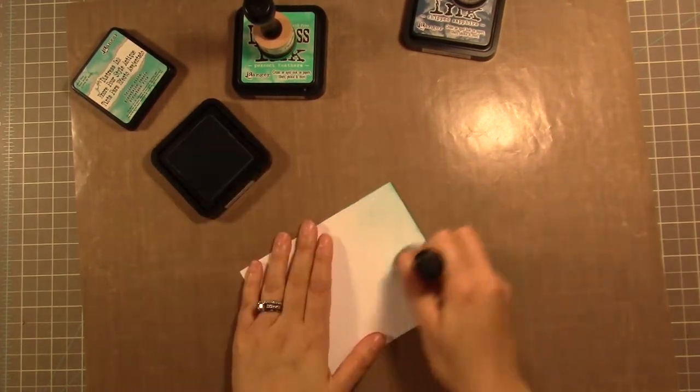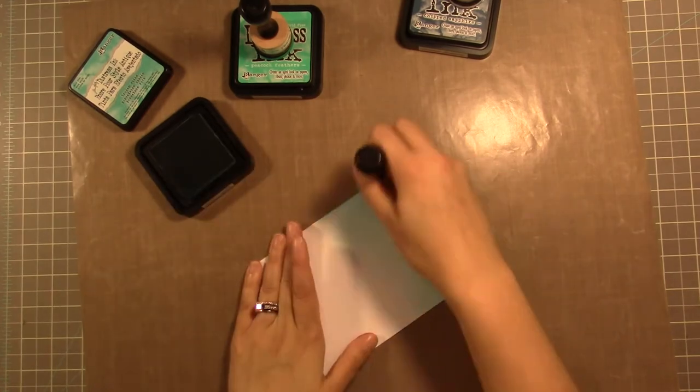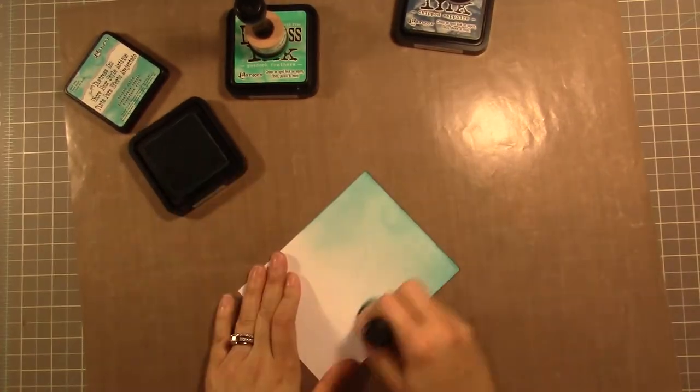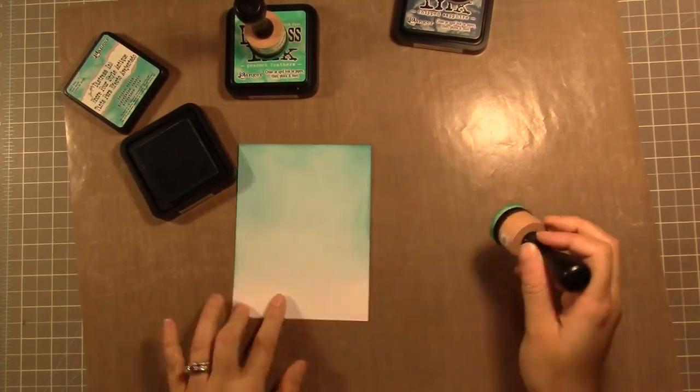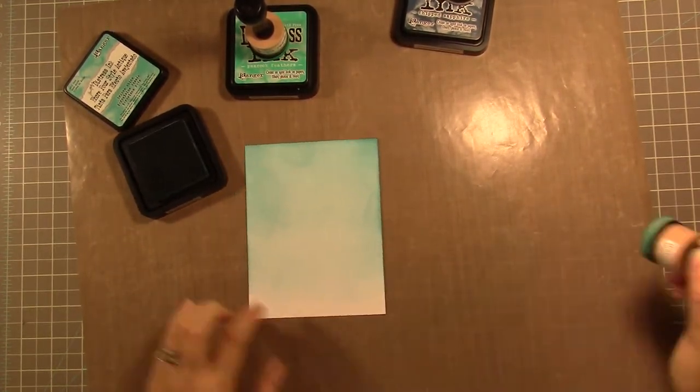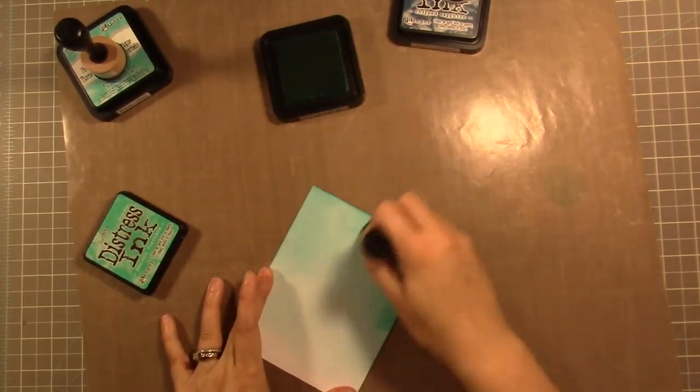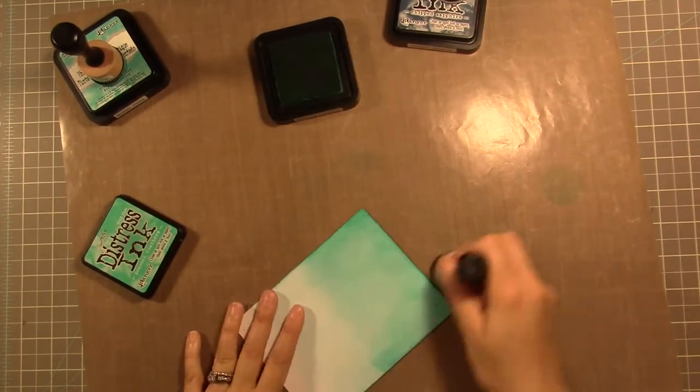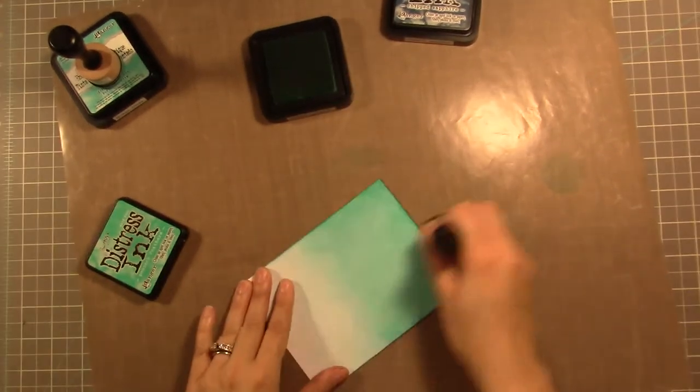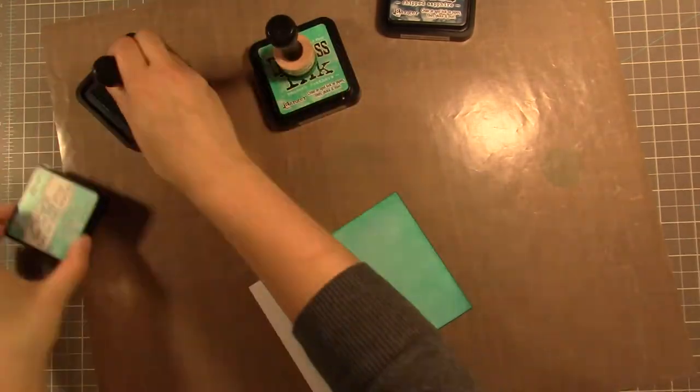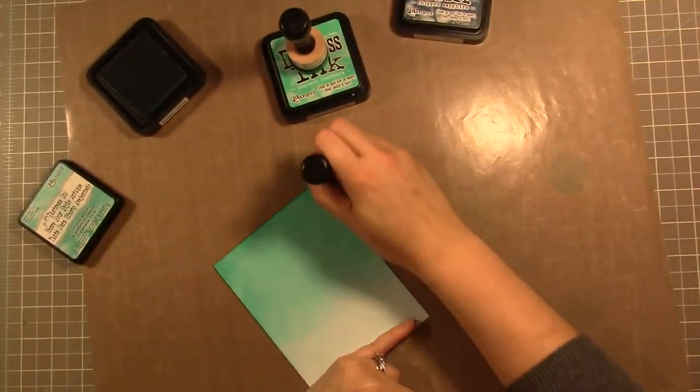Once I get that done, I'm moving on to the background of my shaker card. I'm using the Tim Holtz Distress watercolor paper because I love this stuff - it blends like butter. I'm going to be using a glittery mist to react with this, so I did want to use the watercolor paper since it does really well with water. I'm starting out with Broken China, covering just about all of the panel, and then I'm going over starting from the top with Peacock Feathers to get somewhat of a gradient look.